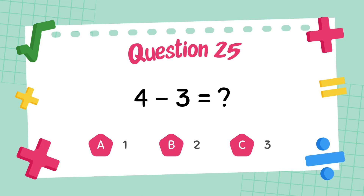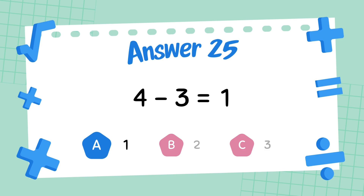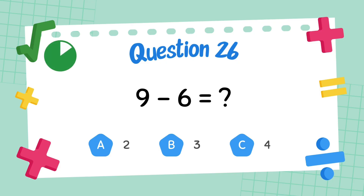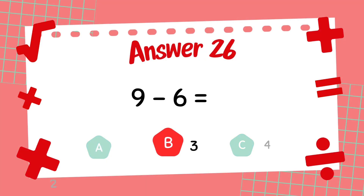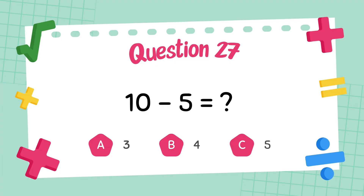What is 4 minus 3? The answer is 1. What is 9 minus 6? The answer is 3. What is 10 minus 5? The answer is 5.